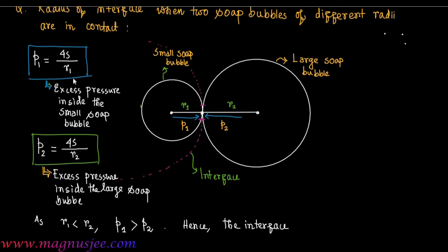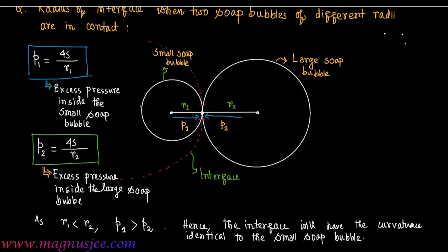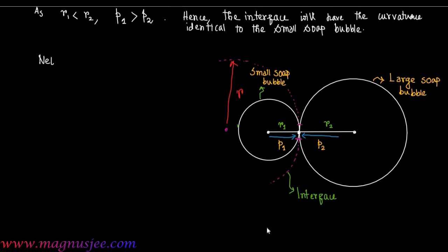Since p1 is greater than p2, the interface will have a curvature the same as the smaller soap bubble. Because the pressure acting inside the small soap bubble is greater than that inside the large soap bubble, the interface has a curvature identical to the smaller bubble. We denote r as the radius of this interface.